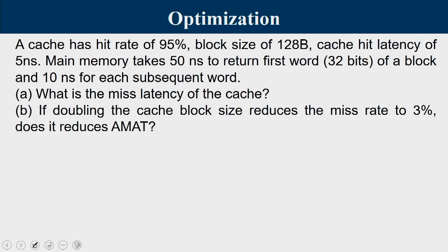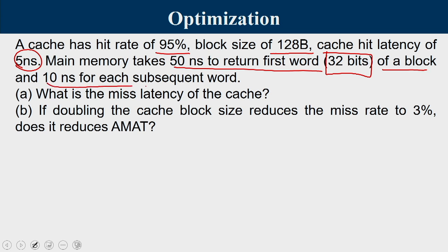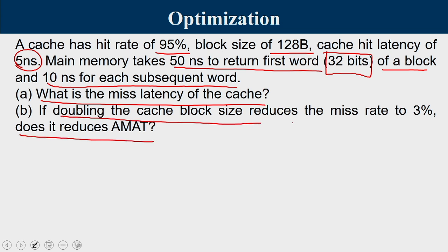We now move to the next question. A cache has a hit rate of 95%, a block size of 128 bytes, a cache hit latency of 5 nanoseconds. Main memory takes 50 nanoseconds to return the first word, where one word is 32 bits (4 bytes), and 10 nanoseconds for each subsequent word. First, what is the miss latency of the cache? Second, if doubling the cache block size reduces the miss rate to 3%, does it reduce average memory access time?